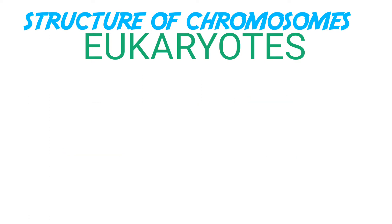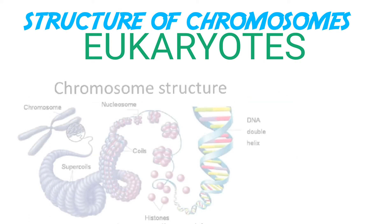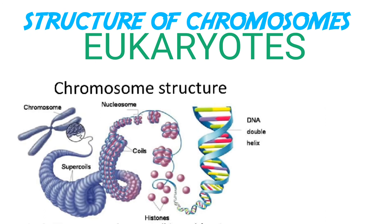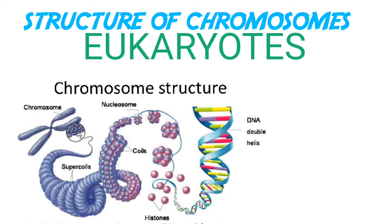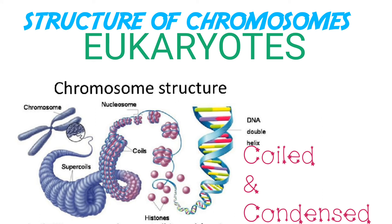This beads-on-string structure in chromatin is further packaged to form chromatin fibers, which are then coiled and condensed at the metaphase stage of cell division to form chromosomes.